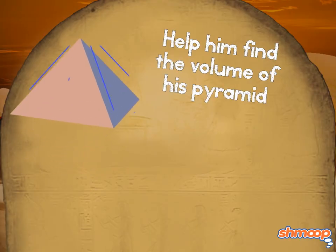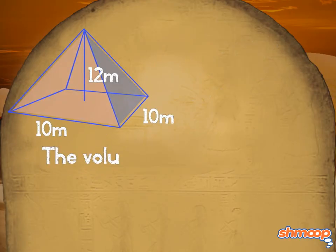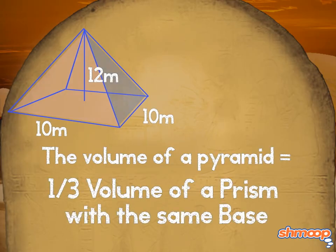The length and width of the base are 10 meters, and the height of Tut's pyramid is 12 meters. The volume of a pyramid is one-third the volume of the prism with the same base.